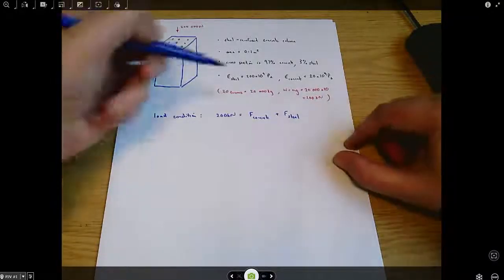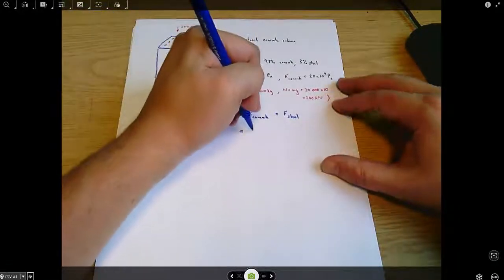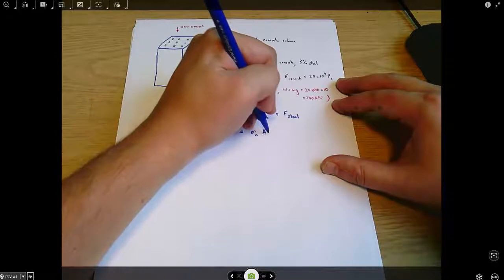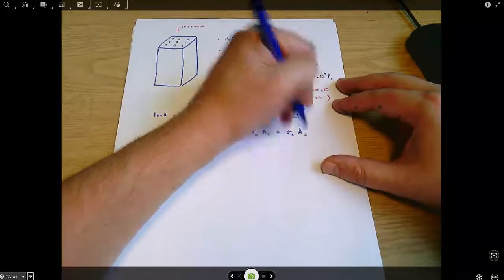And that means then that we can say that's the stress in the concrete multiplied by the area of the concrete, plus the stress in the steel multiplied by the area of the steel.